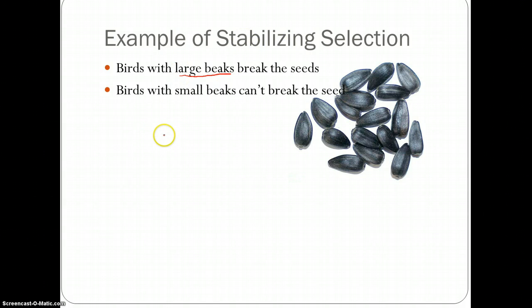In this example, the average size beak, a beak that is not too large or not too small, will be selected for by nature. So the average beak is what will be able to open these seeds. This is what stabilizing selection is saying. The average population, birds with the average size beak, are most likely to survive based on the specific environment where only these seeds are available.